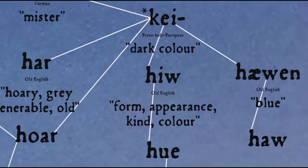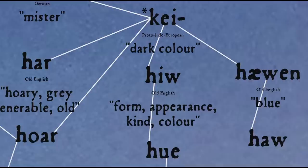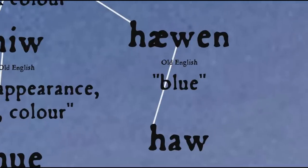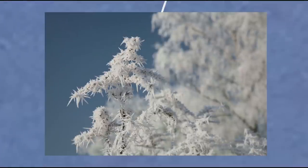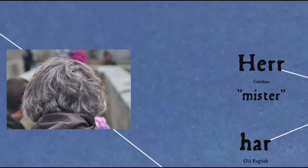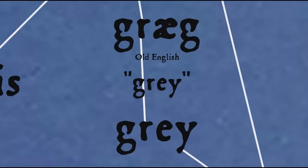The word 'hue' comes ultimately from the Proto-Indo-European root 'kay', which seems to have originally meant a kind of dark colour, and is the source of a number of different colour words in various languages. It's the source of Old English 'hawan', a word meaning blue, which survives into early modern English as 'haw', still used in Scots. It's also the source of the Old English word 'har', the most common Old English word for the colour grey. That survives into modern English as 'hoar' (H-O-A-R), most commonly used to refer to grey hair as well as the colour of frost, as in hoarfrost.